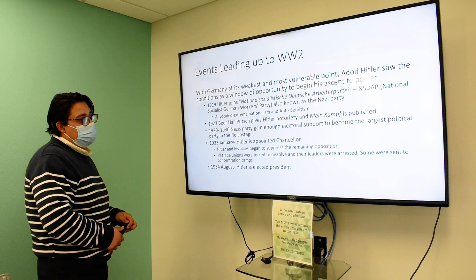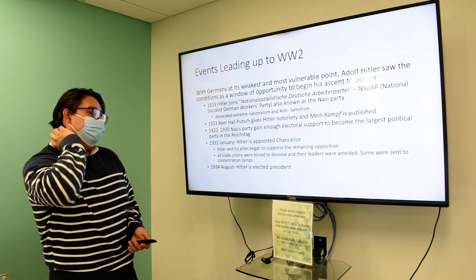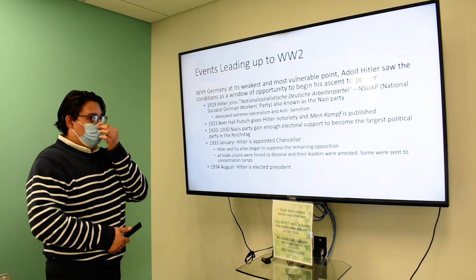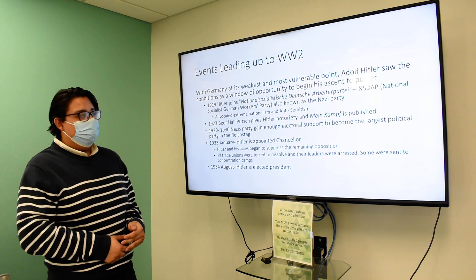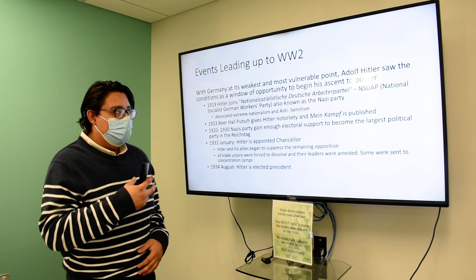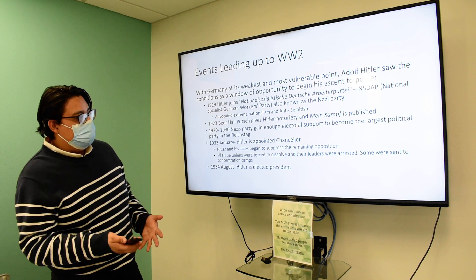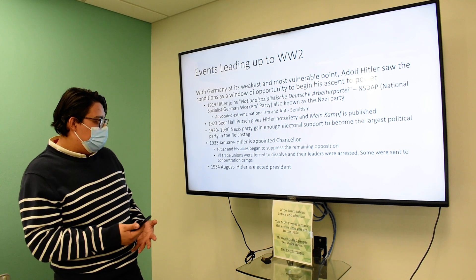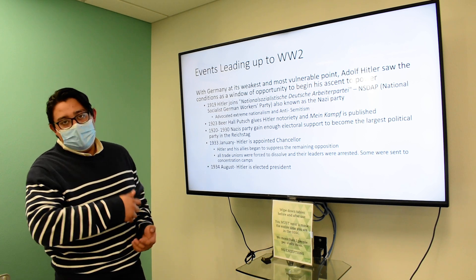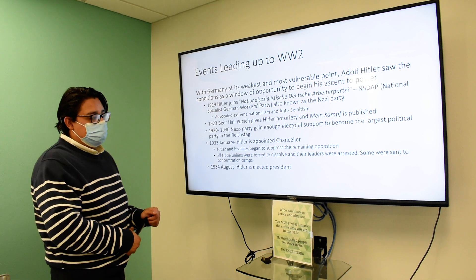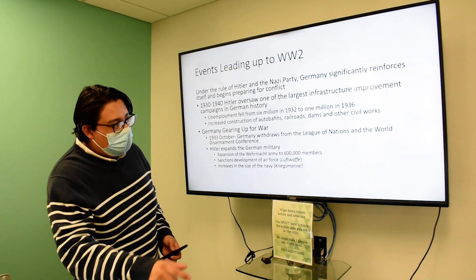With Germany at its weakest point, a man by the name of Adolf Hitler sees this as a window of opportunity to begin his ascent to power. Hitler, who had fought in World War I, is probably the angriest person in Germany during this time. He decides with his political activeness that he's going to take the lead of the Nazi party. In January 1933, he is appointed chancellor and kills off all remaining opposition. In 1934, he becomes president.